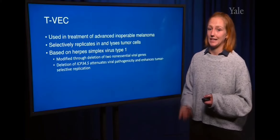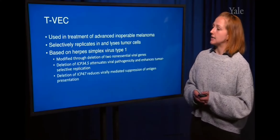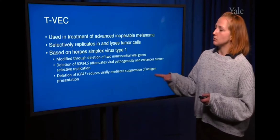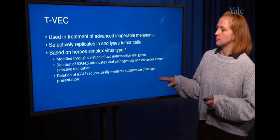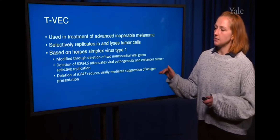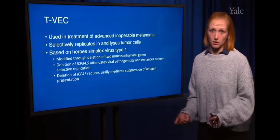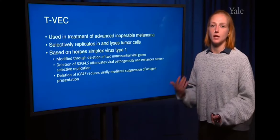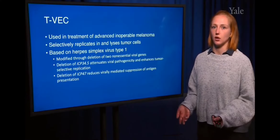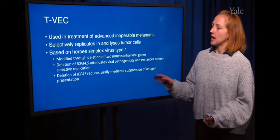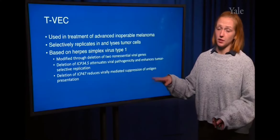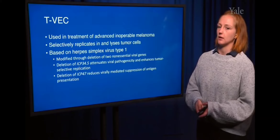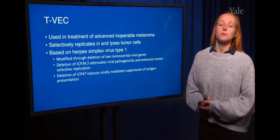In addition, ICP 47 was depleted in TVEC, and this reduces virally mediated suppression of antigen presentation. In a regular herpes virus, ICP 47 directly suppresses antigen presentation to prevent cytotoxic killing of infected cells. However, the deletion of ICP 47 still allows for antigen presentation to occur in the cancer cell.